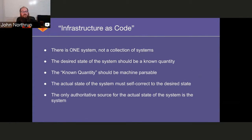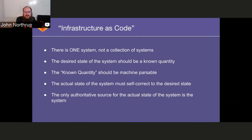The only authoritative source for the actual state of the system is the system itself. The system is continually updating itself with its current state. If we've got five servers, the file that builds the system says five servers — if it's six, it's six. That is the source of authority. It's not in an external runbook or an offline document; it's inherent to the system and the way we're managing it.